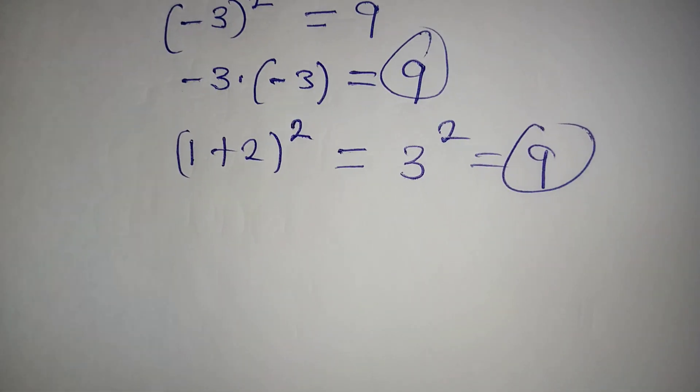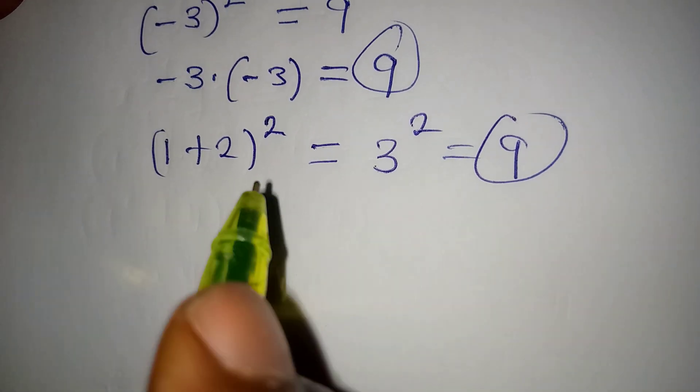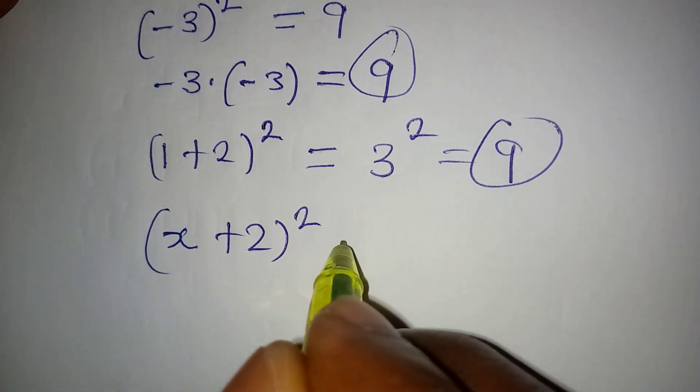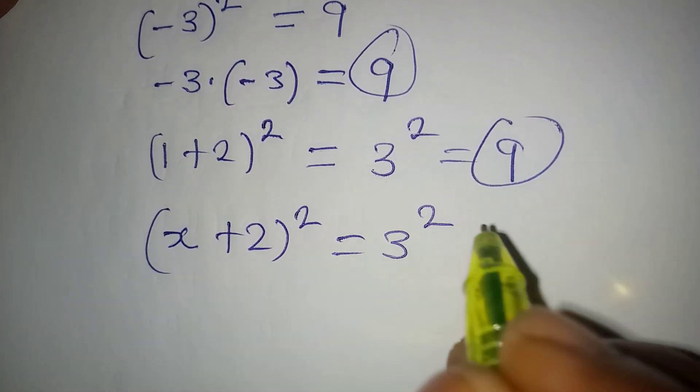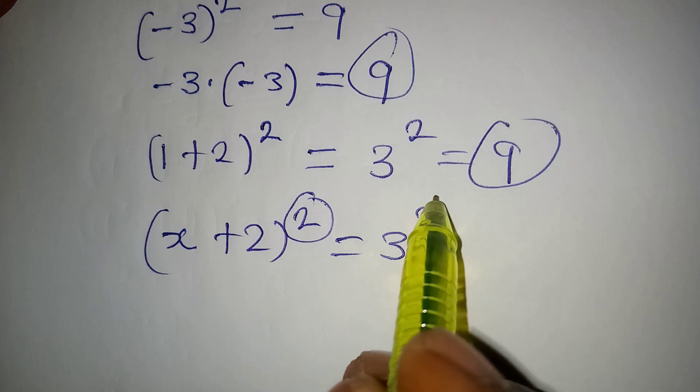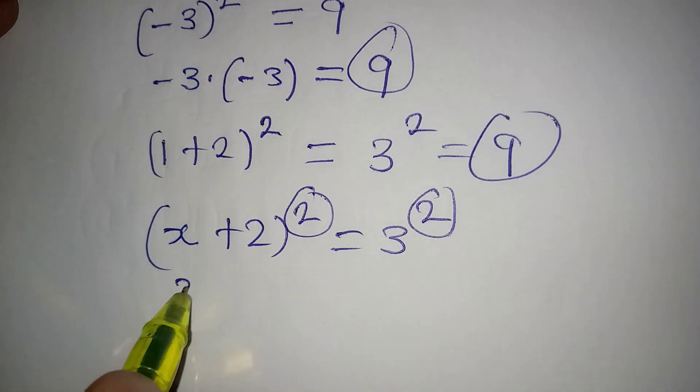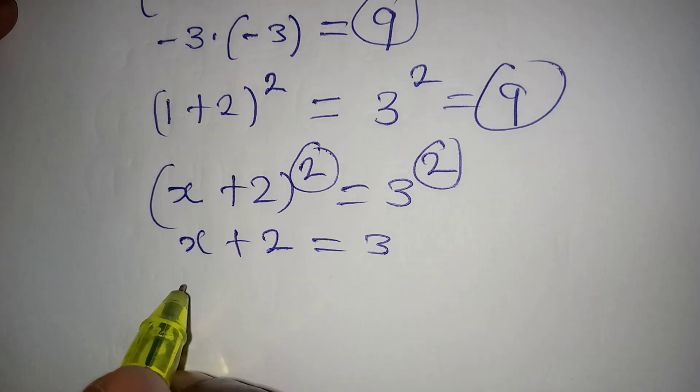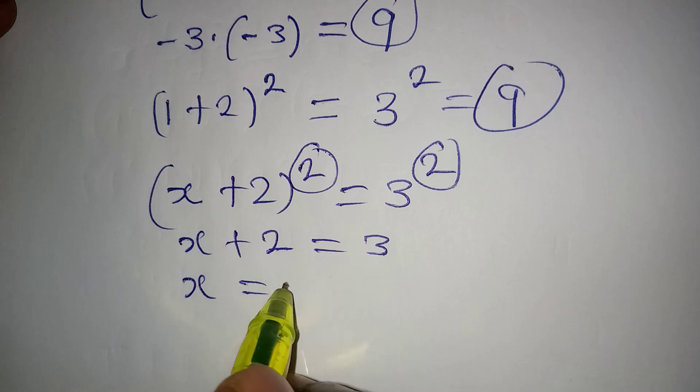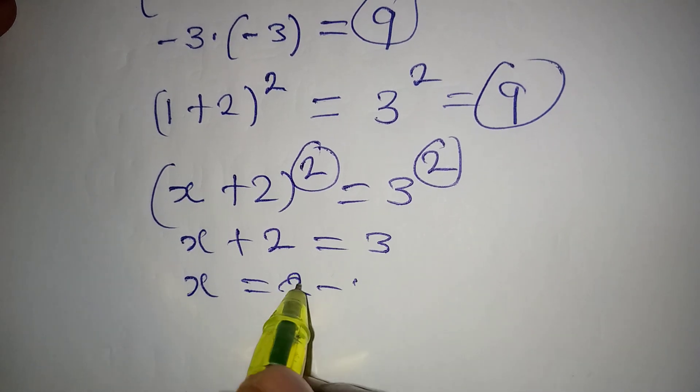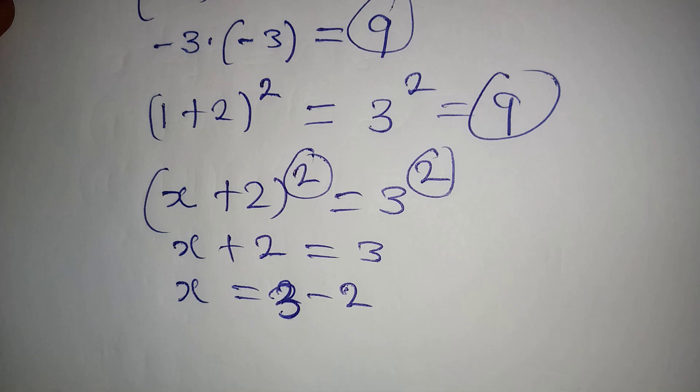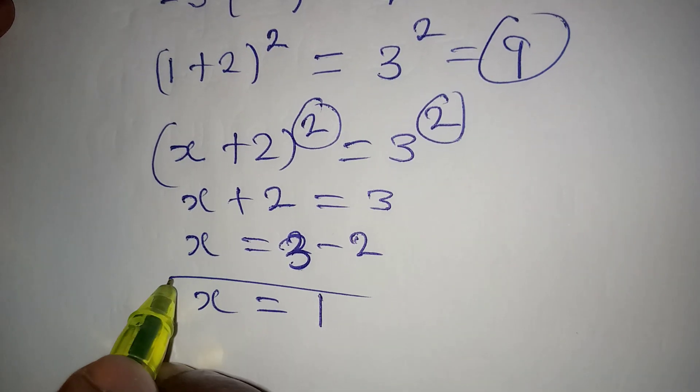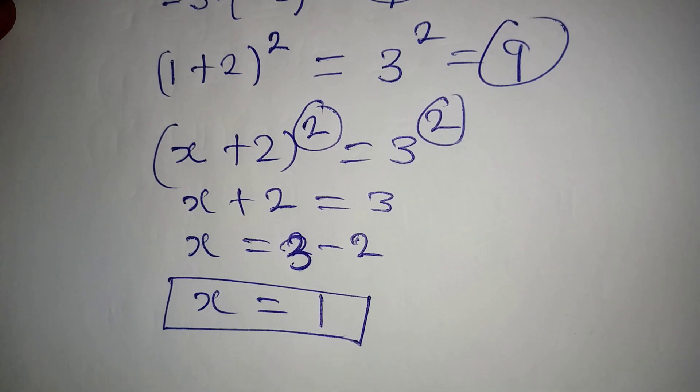But if I hadn't done that, look at this. If I had done this, x plus 2 to the power of 2 equal to 3 squared, and I say because the bases are the same, I will equate the powers. I will be having x plus 2 equal to 3. And this means that x is equal to 3 minus 2. So our x would have been 1 and this would have been the only value of x.